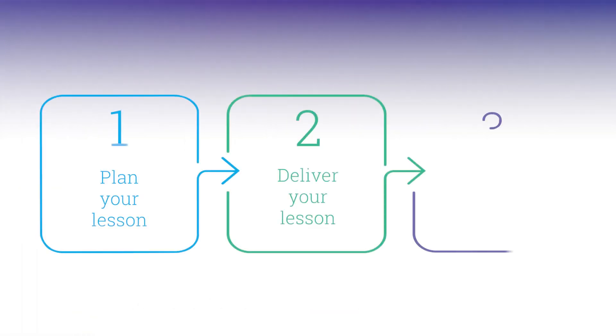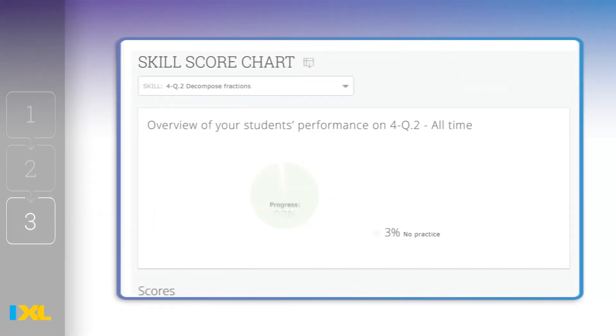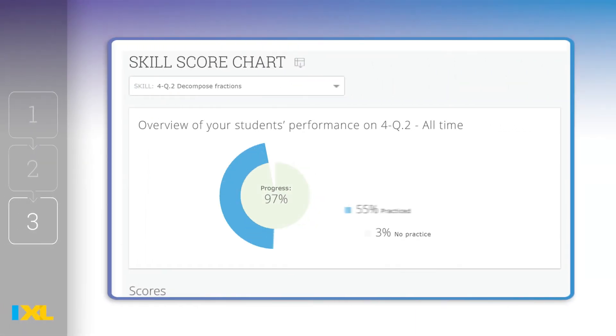After class, tap into iXL analytics to see how well your students understood the instruction. The skill score chart shows you how every student is doing on their assigned skills. Check to see which students achieved their smart score goal of 80.